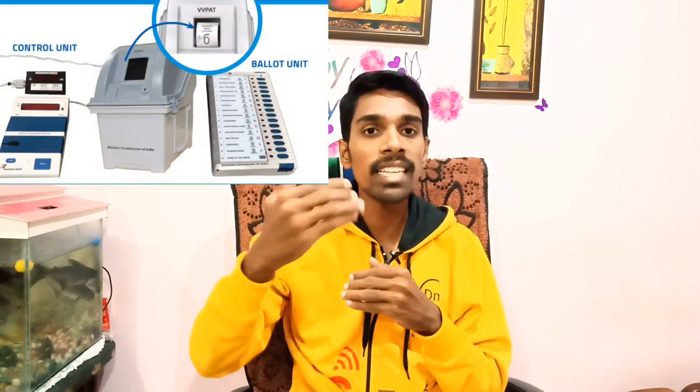Each control unit can register up to 3,840 votes. We can have 64 ballot sheets in total, with 4 ballot sheets attached to one control unit. The numbers are divided as 32, 32, 32, and 64. If we have simultaneous records with the same votes, we can track that.